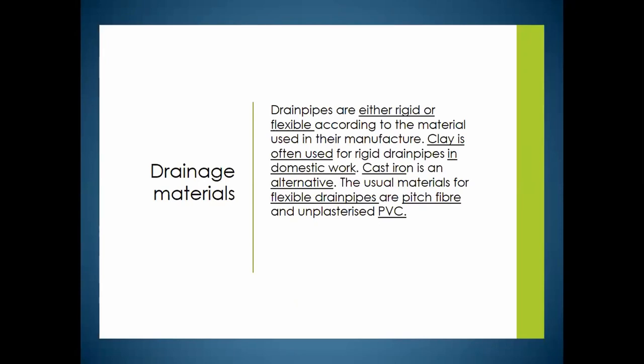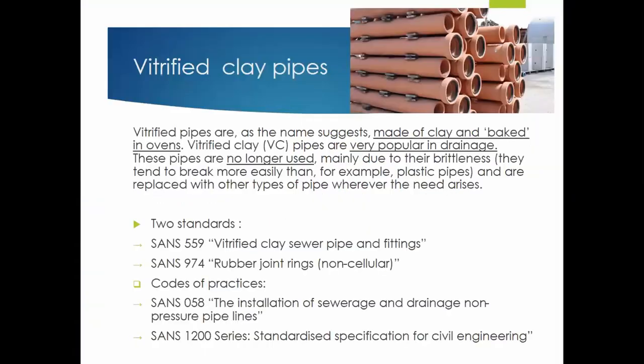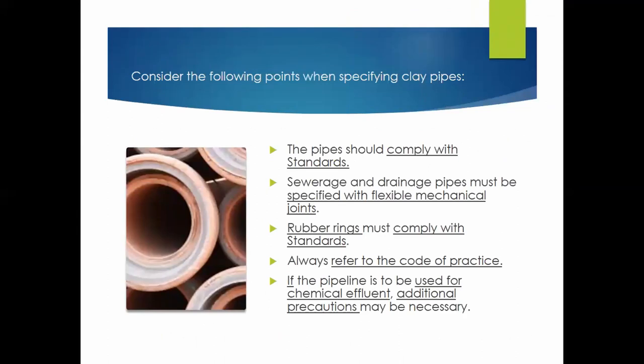Drainage materials are either rigid or flexible. Clay is often used in domestic work, cast iron is an alternative, and flexible drain pipes are usually made of pitch fiber or PVC. Vitrified clay pipes are made of clay and baked in ovens. They were very popular in drainage but are no longer used — when pipes are rebuilt or something goes wrong, they are automatically replaced. There are two relevant standards and codes of practice to be aware of.